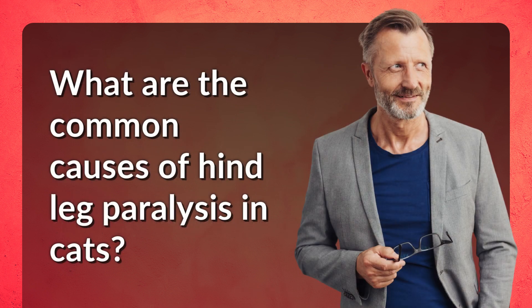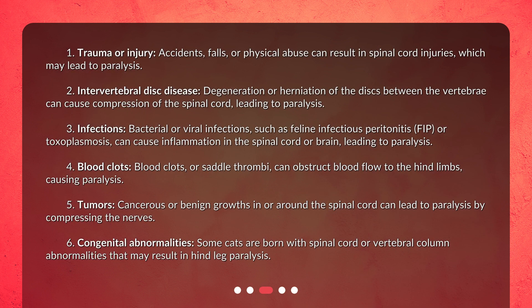Common causes of hind leg paralysis in cats: 1. Trauma or injury — accidents, falls, or physical abuse can result in spinal cord injuries, which may lead to paralysis. 2. Intervertebral disc disease — degeneration or herniation of the discs between the vertebrae can cause compression of the spinal cord, leading to paralysis.